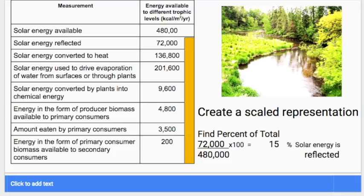And so they made those measurements, and this is all of their data. What we're going to be doing is trying to represent all of this data in a more clear way, because right now it's just a bunch of numbers. I'm going to have you create a scaled representation. You're going to be making some visual diagram that represents how much energy is in all of these different forms. The total amount of energy that is hitting any part of the ecosystem is 480,000 kilocalories per meter squared per year.